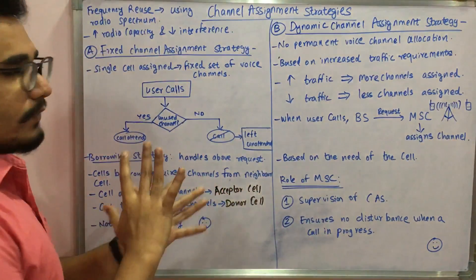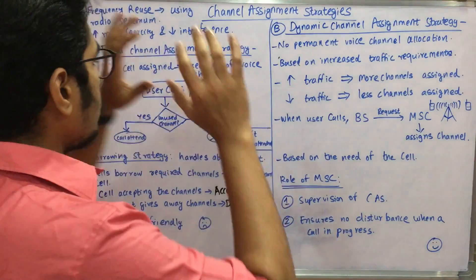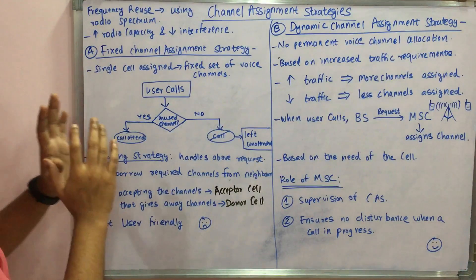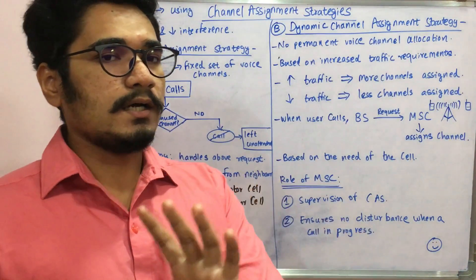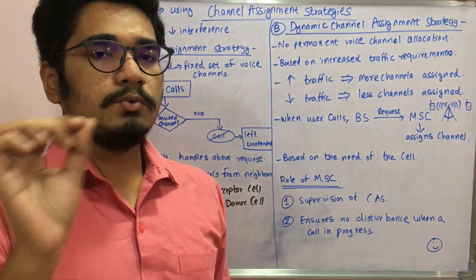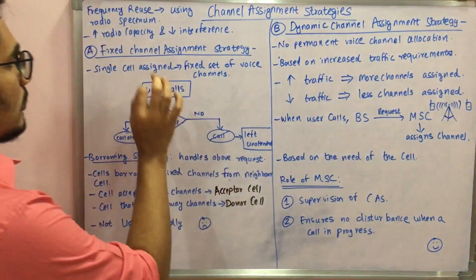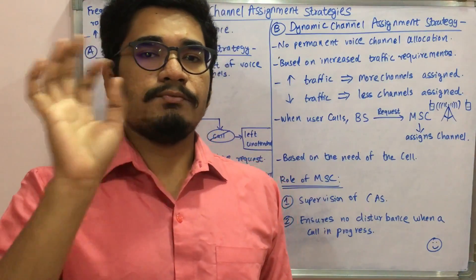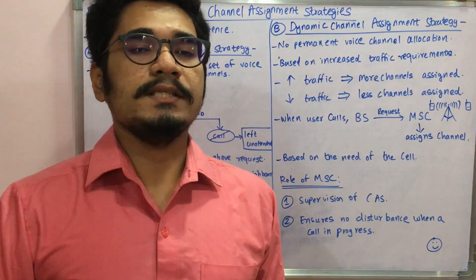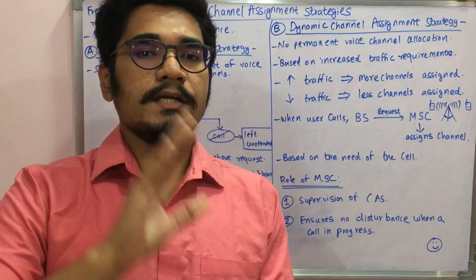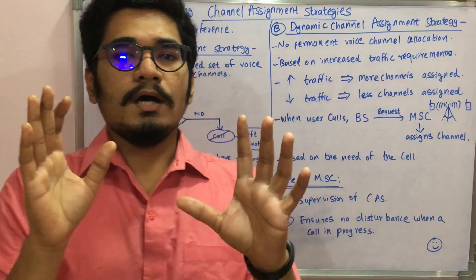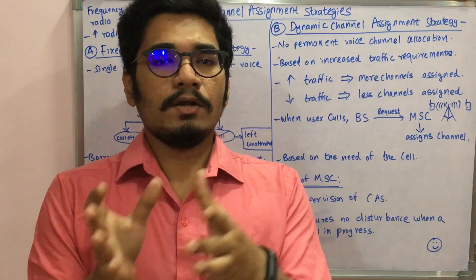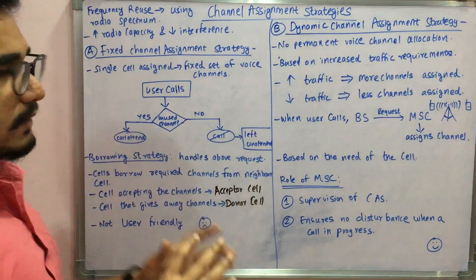There are two channel assignment strategies. The first is the fixed channel assignment strategy. In this, every single cell in the honeycomb structure — cell one, two, three, four, five, six, seven — is assigned a fixed set of voice channels. For example, cell one might be assigned four channels, cell three assigned 17 channels, and cell five assigned 20 channels. There is no dynamic allocation; the channel assignment is fixed.